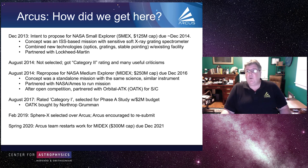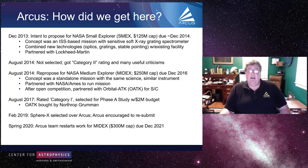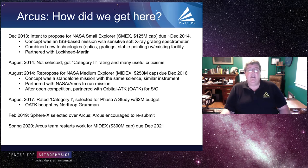NASA has a particularly harsh way of rating explorer proposals. Category 1 means they like it and will tend to give you funding to continue. Category 2 means it's nearly as good but they might or might not give you money. Category 3 means you have a good idea but your technology isn't ready — they'll give you money to develop it and ask you to come back. Category 4, which sadly most proposals receive, basically means go away — NASA didn't like your idea.